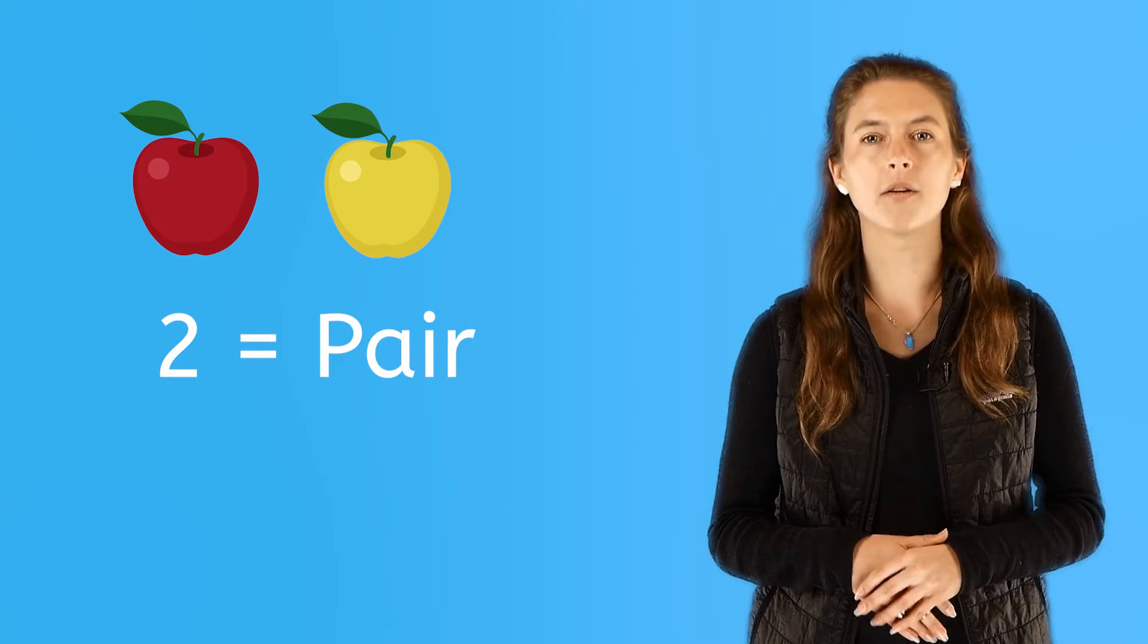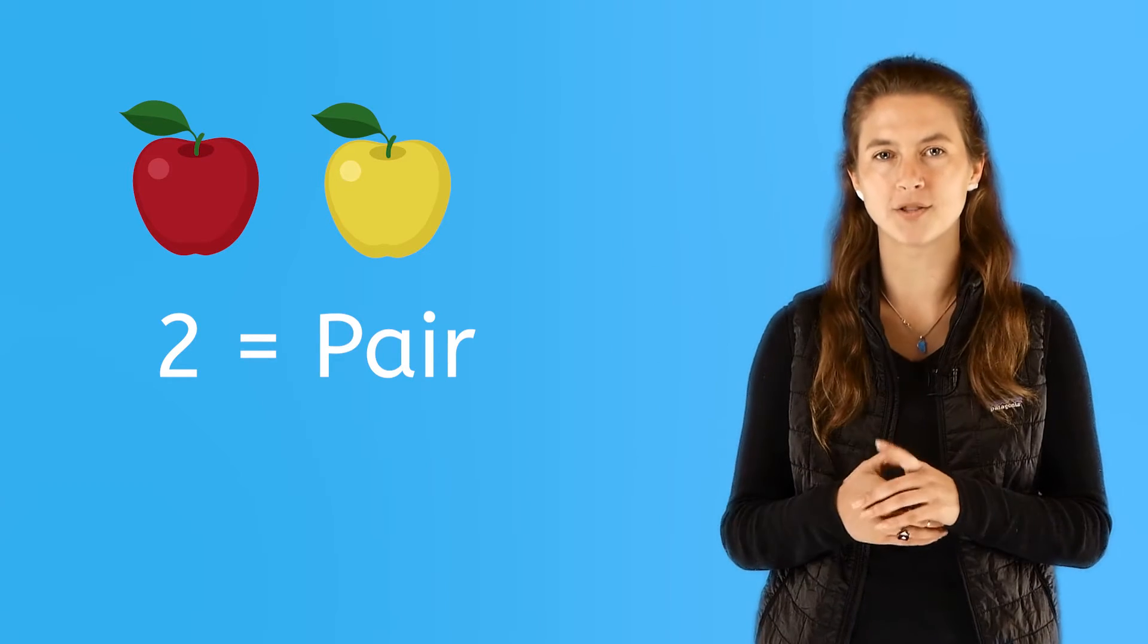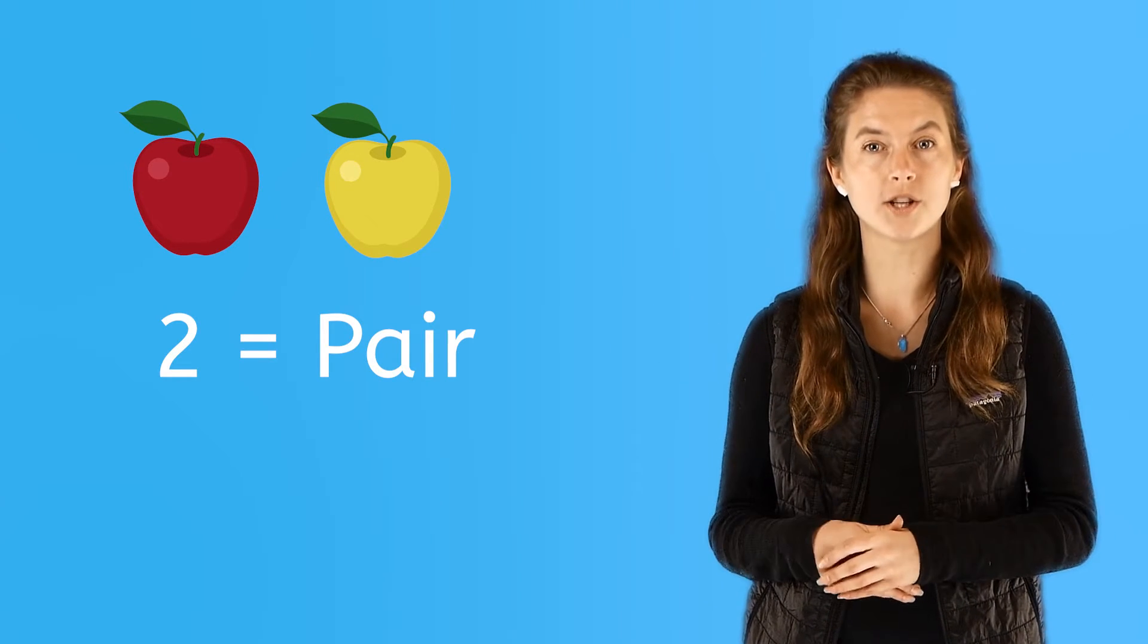Here we have two apples. Count them again: 1, 2. When you have two of something, you can say that you have a pear. Here we have a pair of apples, a pear: 1, 2.